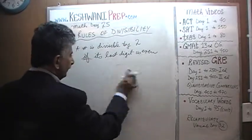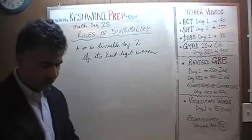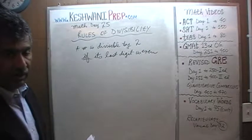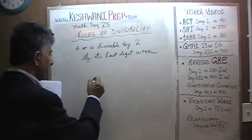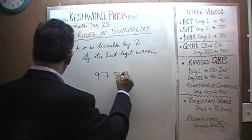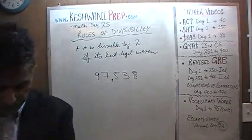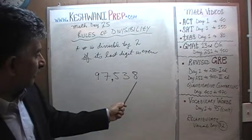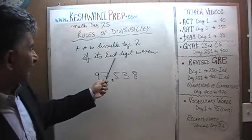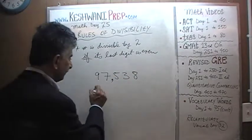Let's do one more. Even if you have a very long number where every single digit is odd, as long as the very last digit is even — for example, 97,538 — the number is divisible by 2. Let's divide this number by 2.